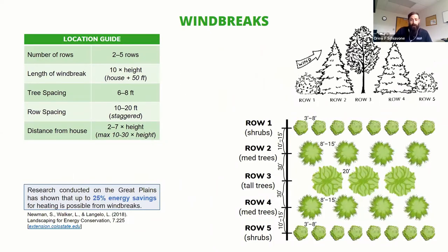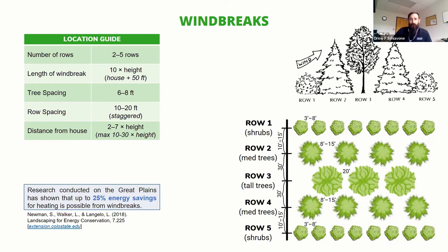You're typically going to benefit from more than one row. The example here shows five different rows — two to five rows is typical, and they're staggered so that wind can't wind its way through. You typically want the windbreak to be longer than the wall you're trying to protect — probably extending 50 feet beyond that line so the wind doesn't wrap around and come back towards your house. Spacing depends on the size of the tree, and a county agent could help you with that.